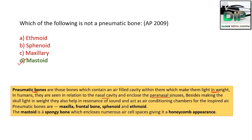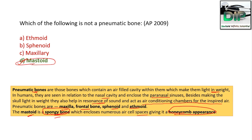Besides making the skull light in weight, pneumatic bones also help in resonance of sound and act as an air conditioning chamber for inspired air. The pneumatic bones in humans are maxilla, frontal bone, sphenoid, and ethmoid. Talking about mastoid — it is a spongy bone which encloses numerous air cell spaces, giving it a honeycomb appearance. So mastoid bone is not a pneumatic bone; it is a spongy bone.